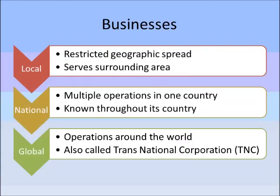Local businesses are restricted by their geographic spread and really only serve the surrounding area — people might travel in to go to those businesses. National businesses have multiple operations in one country and are often known throughout that country — again we use the example of Myer or David Jones. Global businesses have operations around the world, also commonly known as a Transnational Corporation or TNC. Trans means across, national means countries, and corporation is a limited liability company — so a company that operates across many countries.